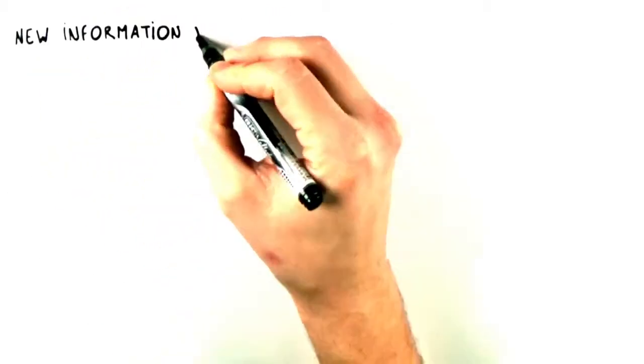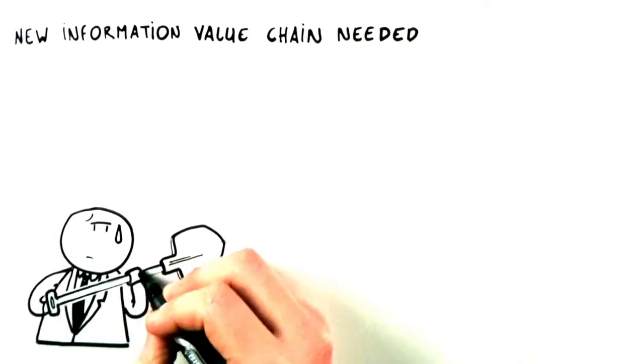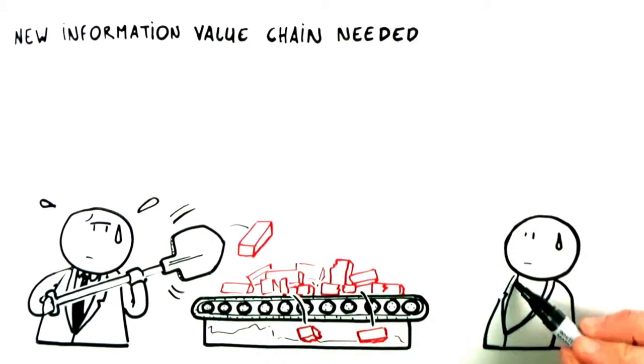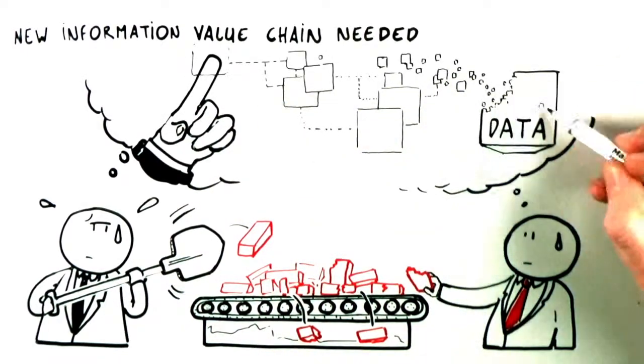A new information value chain is needed for reporting to work properly in the 21st century. Template-based reporting is hampering data quality and effective regulatory reporting. This means greater integration and automation of regulatory reporting.